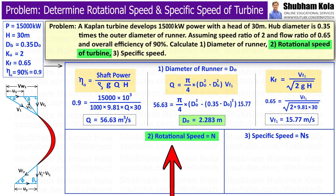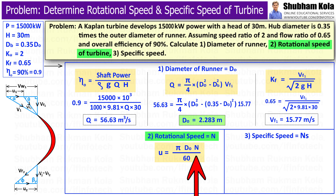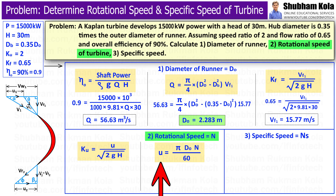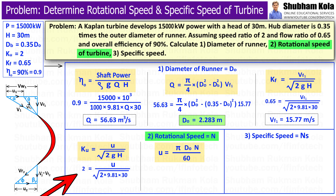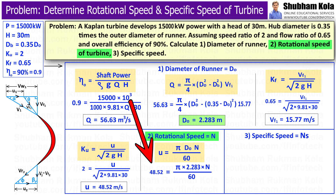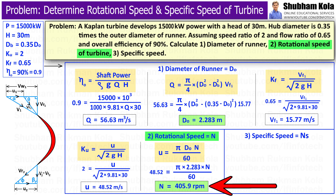Next, we calculate the rotational speed of the turbine, capital N, using the tangential velocity formula: u equals pi × Do × N divided by 60. The tangential velocity u is calculated from the speed ratio formula — speed ratio is 2 and head is 30 meters — giving u equal to 48.52 m/s. Substituting this value, we get the rotational speed N equal to 405.9 rpm.